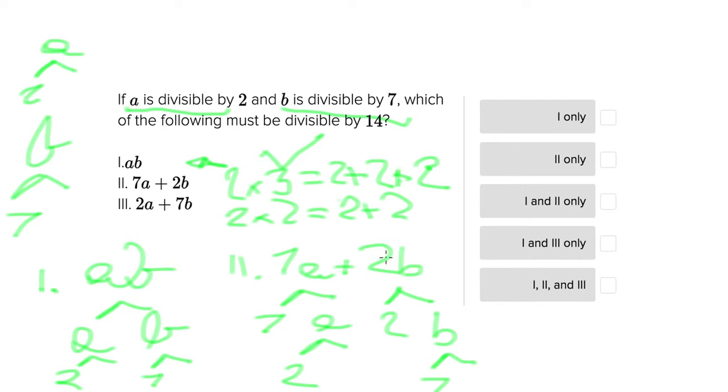So if you're adding numbers that share a common factor, of course you're going to have that same factor. Because in multiplication, the factor 2 here in both of these is what is being added. So 14 is a shared factor between both of these, and it will be a factor of the resulting answer to 7a plus 2b. So this one works as well.